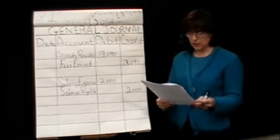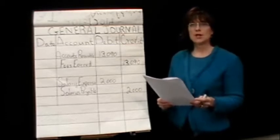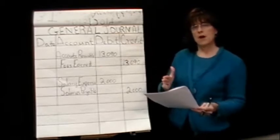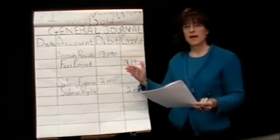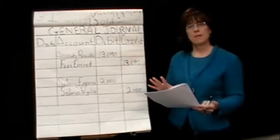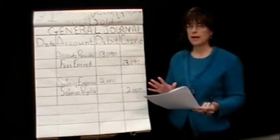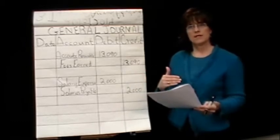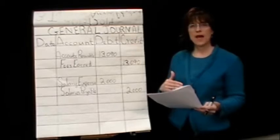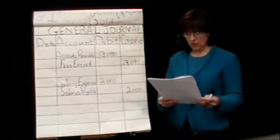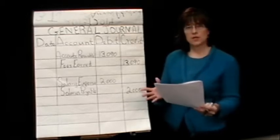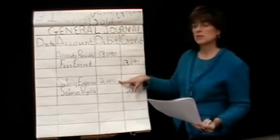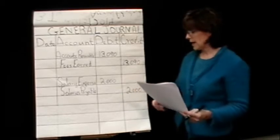The next question asks what amount would be needed if the payroll period ended on Thursday instead. Remembering that employees get paid on Friday, if our period ends on Thursday with a five-day work week, we owe them for Monday, Tuesday, Wednesday, and Thursday — four days. With a weekly payroll of $5,000, the daily rate is $1,000. Four days times $1,000 equals $4,000. So the entry would be: debit salaries expense $4,000 and credit salaries payable $4,000.